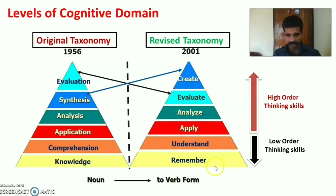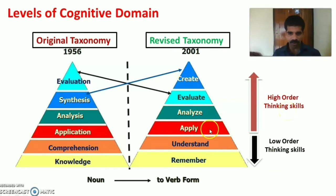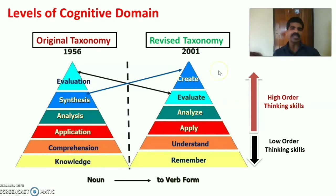The first two levels — remember and understand — come under low order thinking skills. High order thinking skills include apply, analyze, evaluate, and create.